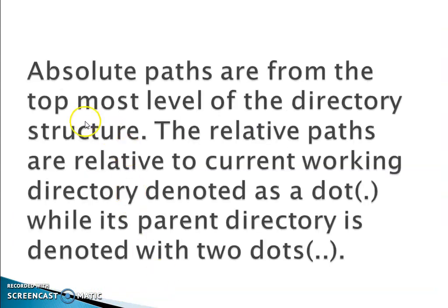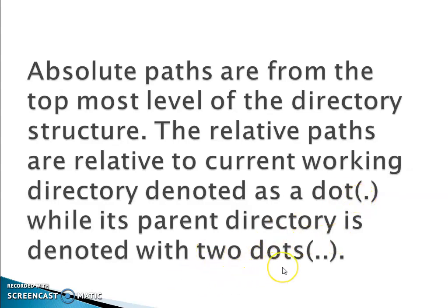Absolute paths start from the top-most level of the directory structure. Relative paths are relative to the current working directory, denoted by a single dot. The parent directory is denoted with two dots.